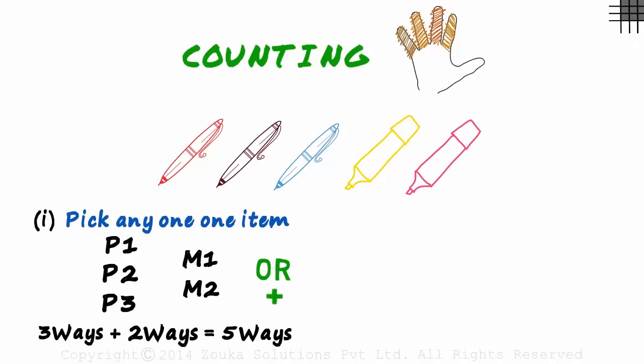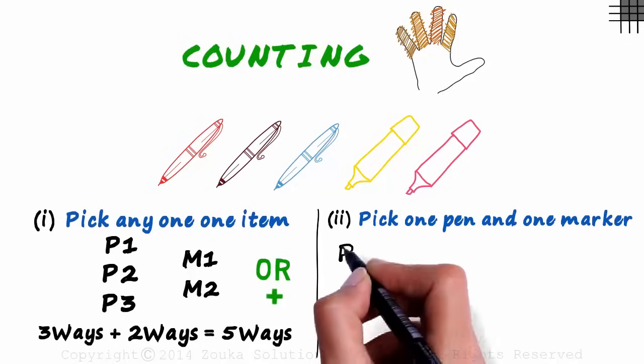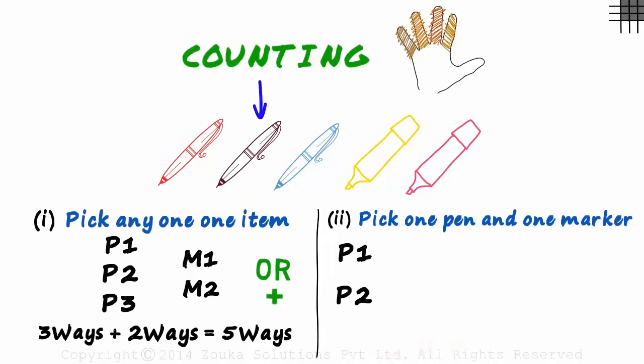Now let me ask you another one: In how many ways can we pick one pen and one marker? One pen and one marker. Tell me what you think? We have to pick a pen and a marker. In how many ways can we pick a pen? We pick either the first or the second or the third. Now having picked one pen, we need to pick a marker.